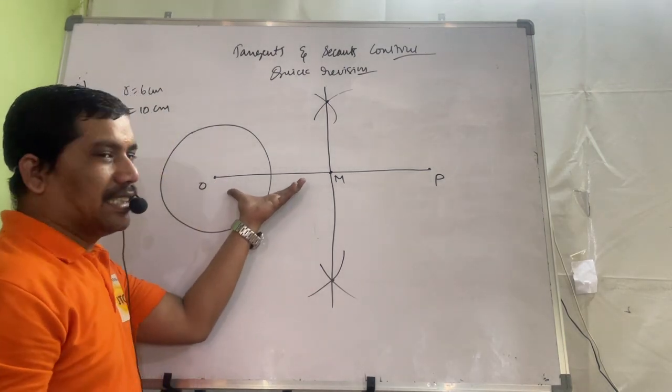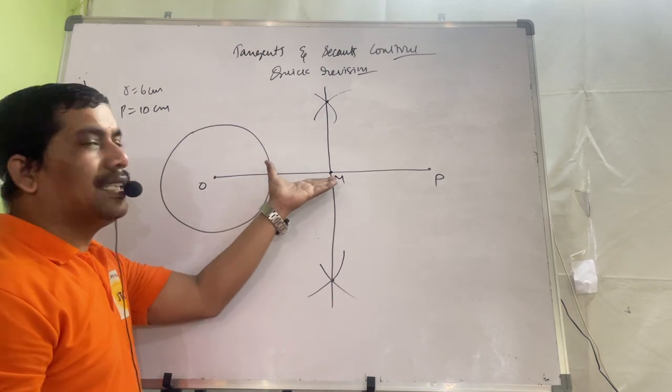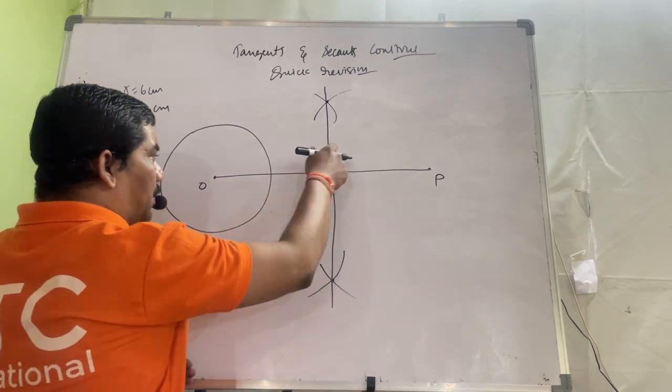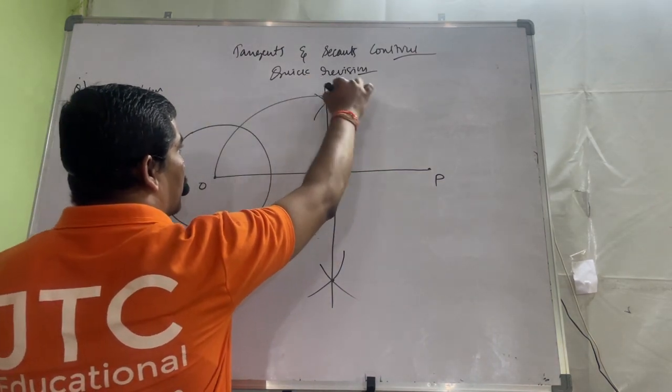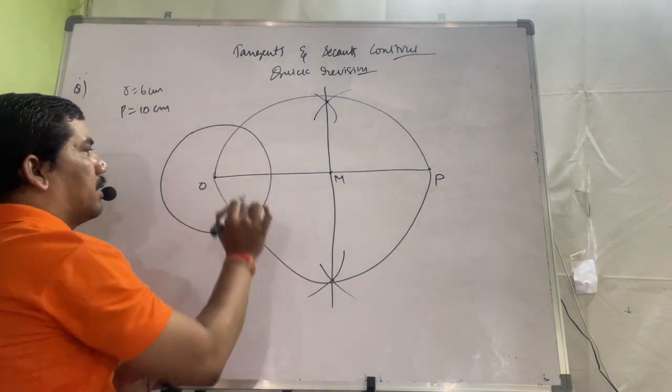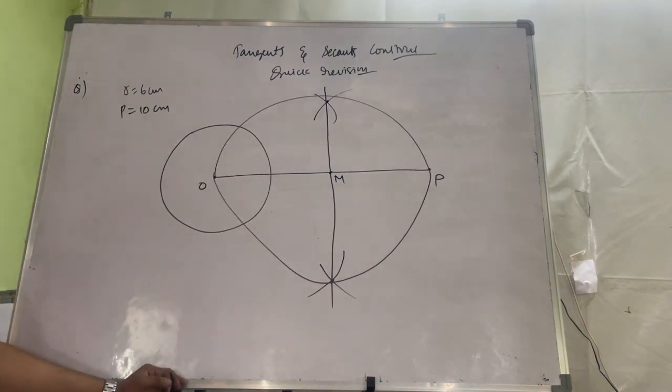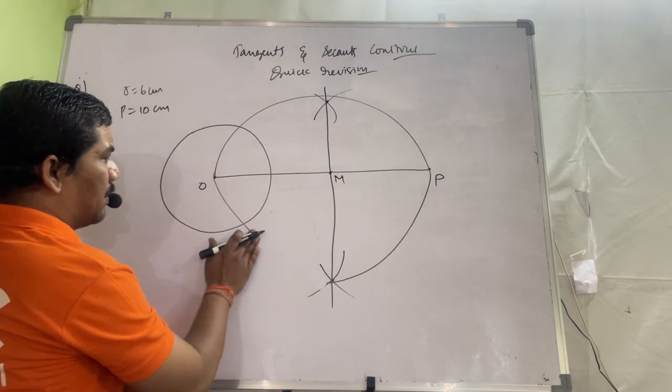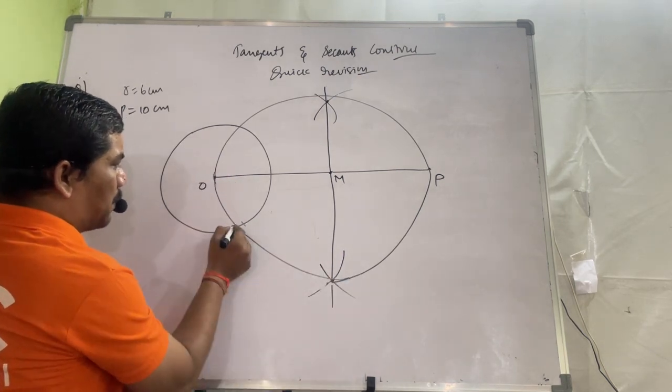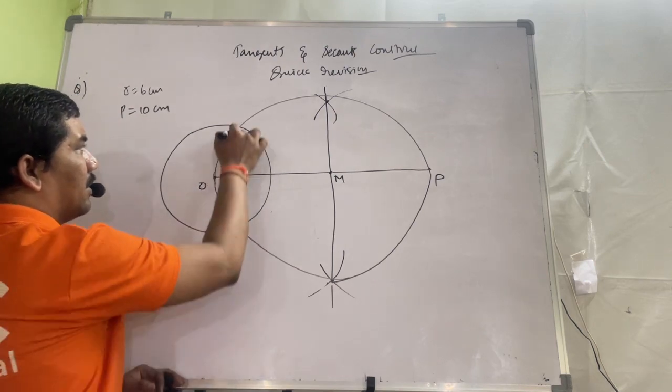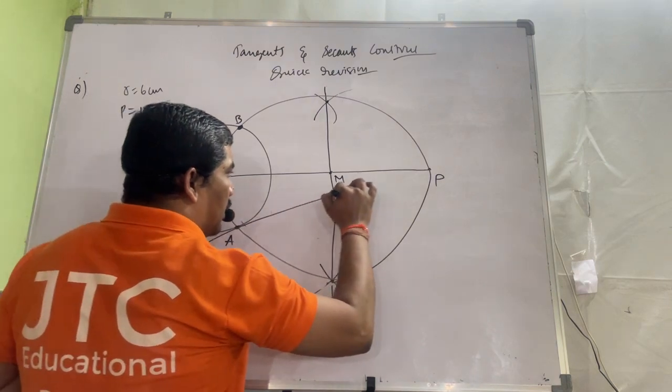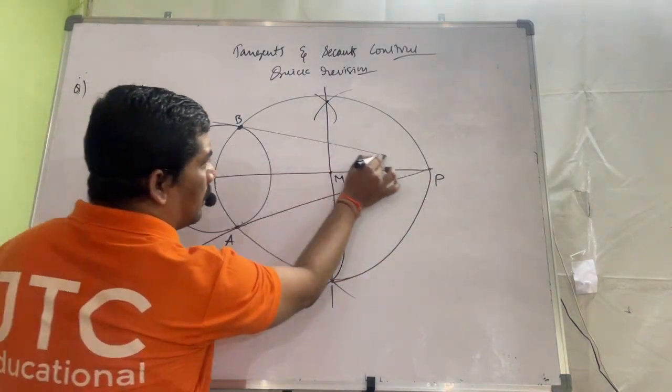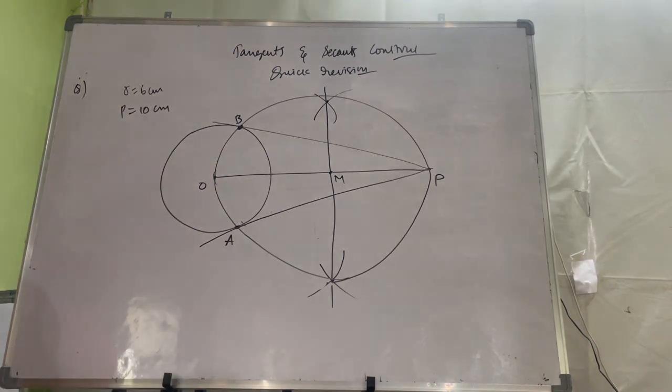Now compass you take OM radius, setting should be this much. Center should be M. Keep your compass on M and this much radius you take and draw one circle. These two circles are meeting somewhere. They are meeting at this point, one is meeting here, you name A. One is meeting here, you name as B. Now join A, P and B, P. So this AP and BP are the pair of tangents.